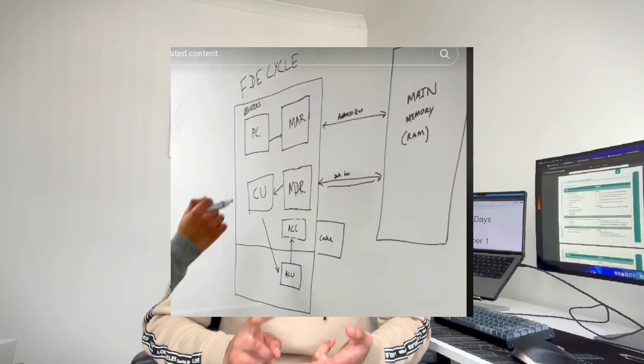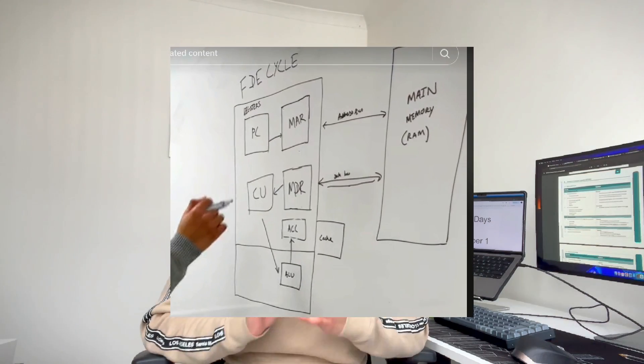Topic number one: 1.1, CPUs and registers. The hot topic here is registers. Students often confuse MDR and MAR. Although you're not strictly required to know how registers relate during the FDE cycle, understanding how they're used in the fetch-decode-execute cycle helps clarify what the purpose of each register actually is.